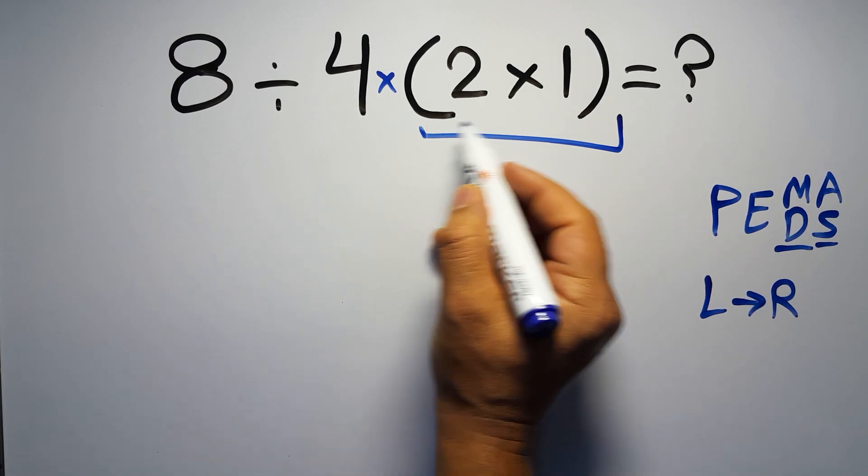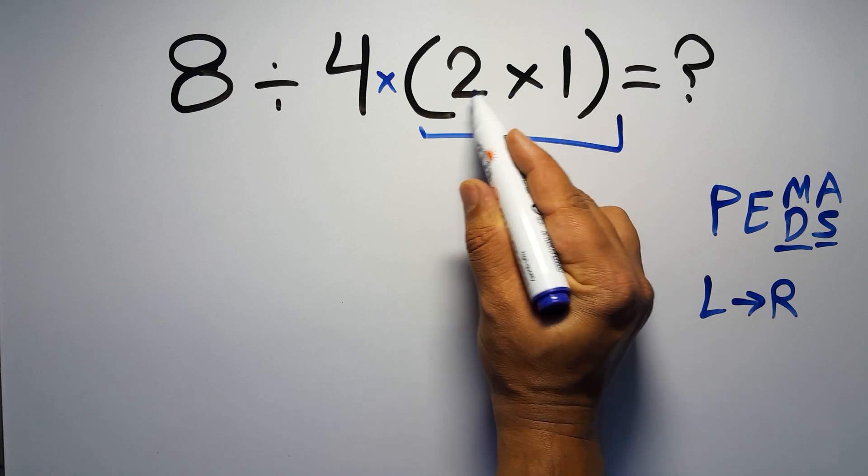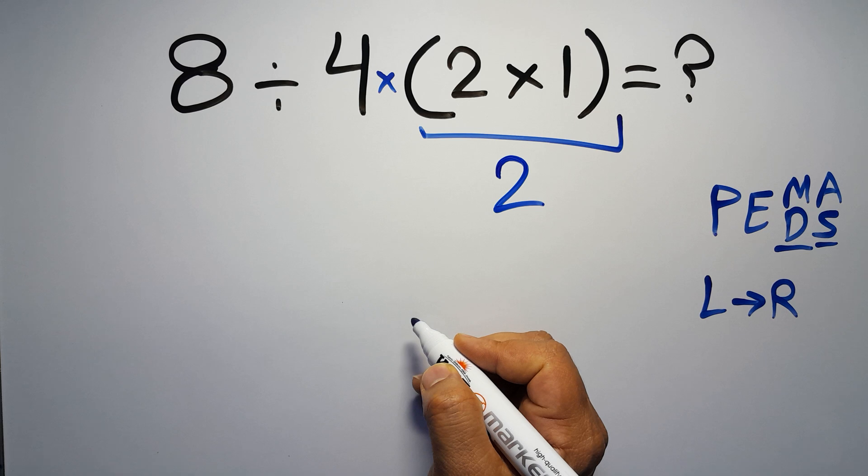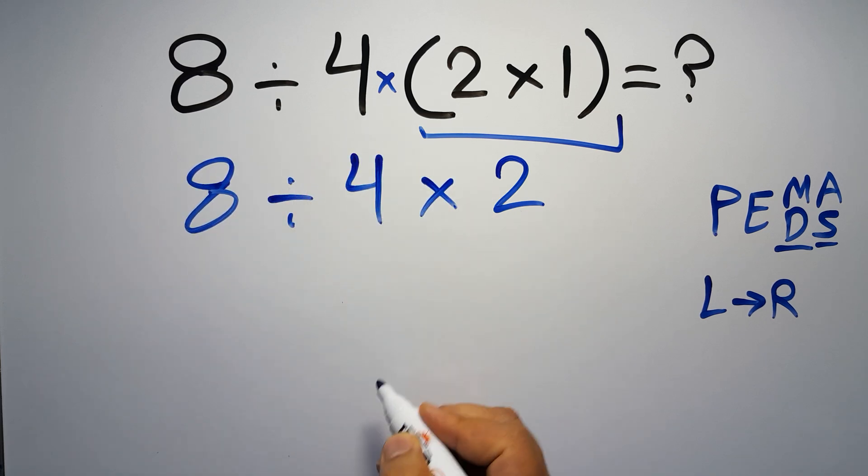So first we have to do these parentheses. 2 times 1 gives us 2. So 8 divided by 4, then times 2.